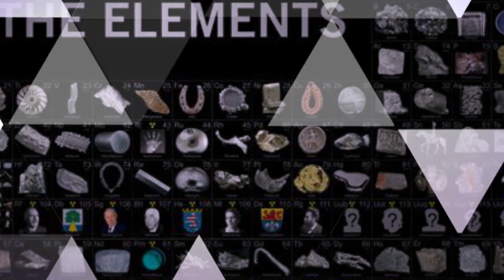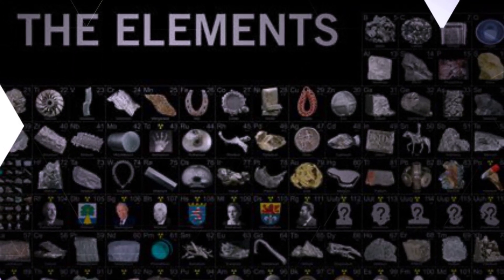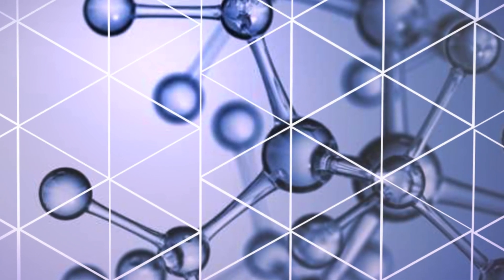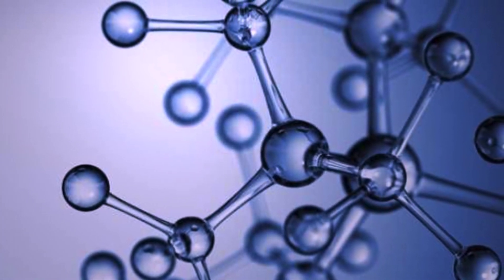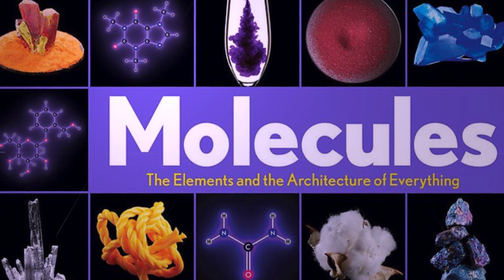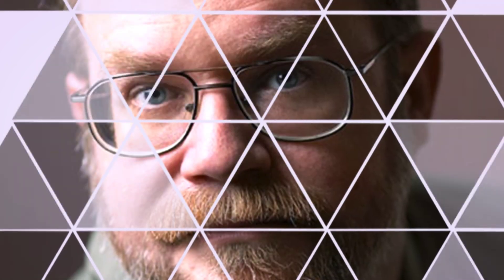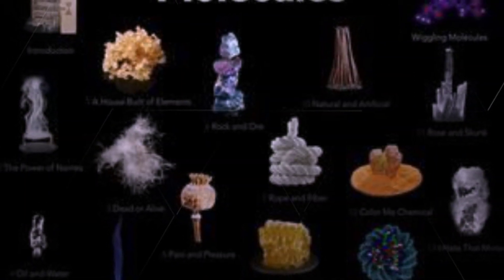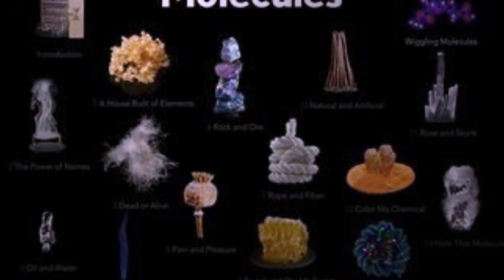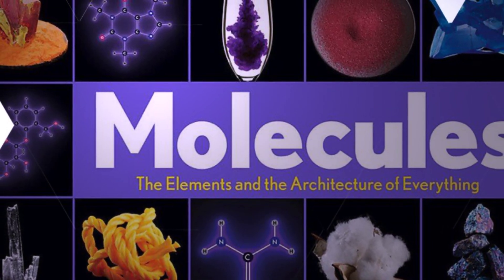Everything in the physical world is made of elements from the periodic table. Those elements combine with one another in endless amalgamations to create a vast array of molecules, which are the architecture, the building blocks of everything around you. To explain molecules, you really have to start with elements and atoms. Science writer Theodore Gray, along with photographer Nick Mann, explores this grand story in his book, Molecules: The Elements and the Architecture of Everything.